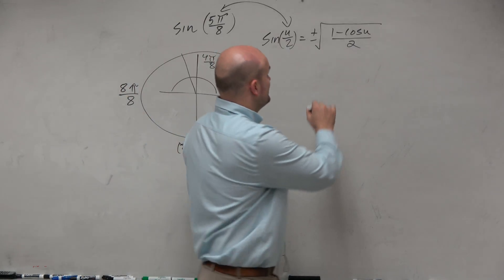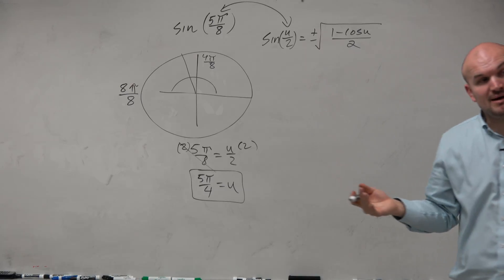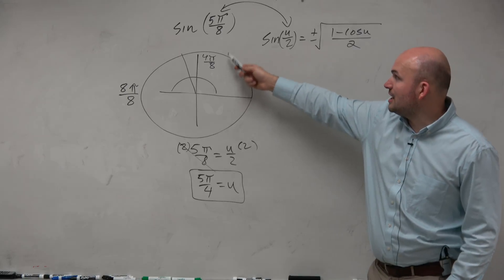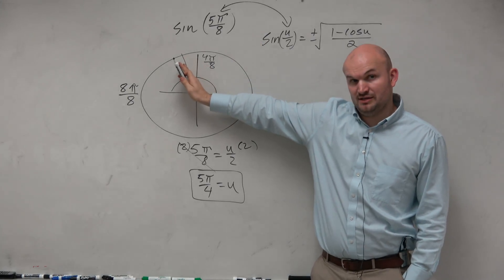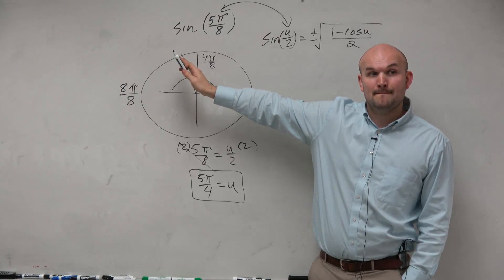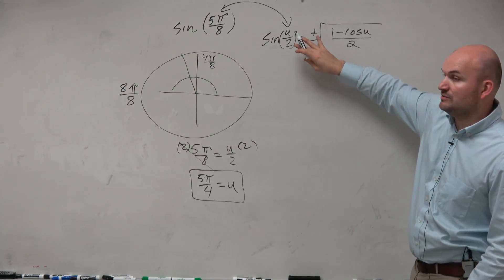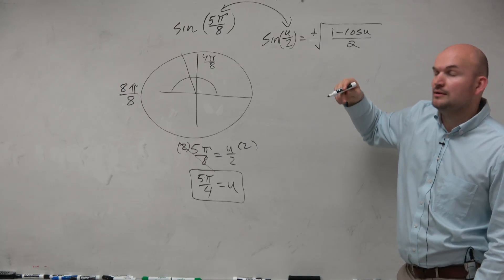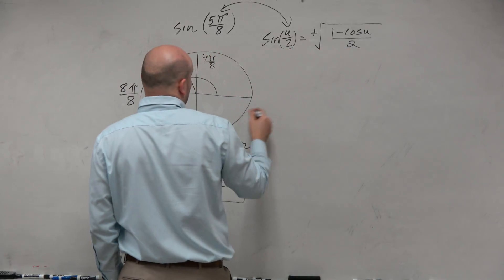The other thing that's important is we have a plus or minus. And what the plus or minus refers to is when is sine positive or negative based on the angle. We figured out 5π over 8 is right here in the second quadrant. Is sine positive or negative in that quadrant? Positive. So therefore, we don't need to include plus or minus. We just need to include the positive form.